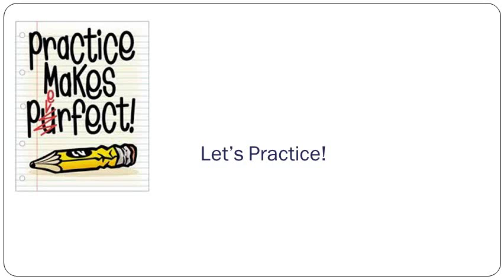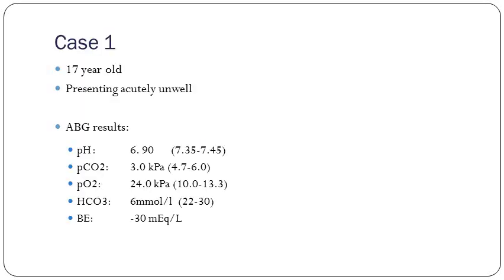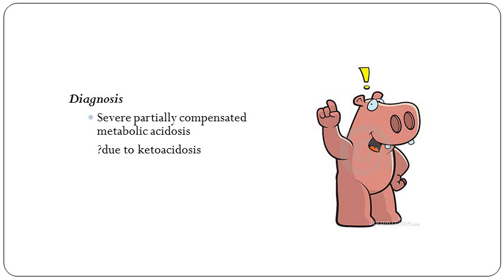We've got some practice ones. First of all, a 17-year-old patient who comes in acutely unwell — we've got these ABG results. If you just have a quick look at them and talk through what you think is happening. Someone wants to have a go? The answer: severely partially compensated metabolic acidosis.